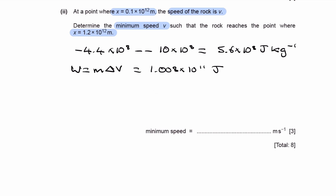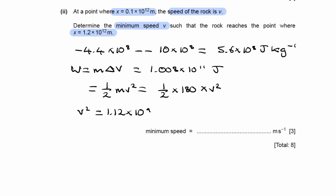We equate this to ½mv²: ½ × 180 × v² = 1.008 × 10¹¹. Dividing 1.008 × 10¹¹ by 90 gives v² = 1.12 × 10⁹. Taking the square root gives v = 3.3 × 10⁴ meters per second. That is our final answer.